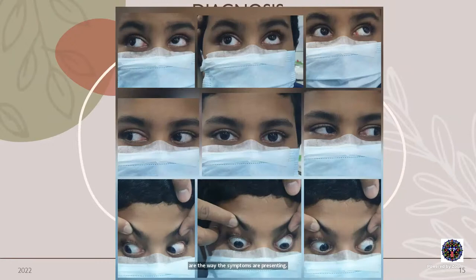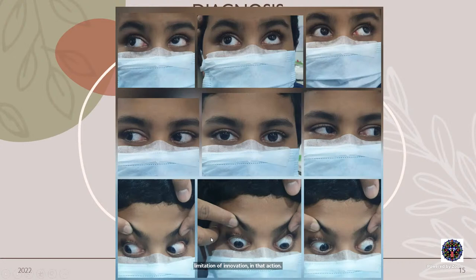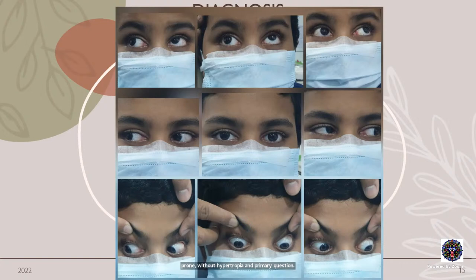Looking at signs: here is a nine-gaze photo of a patient. Primary position looks perfectly normal — no hyper or hypotropia. But in up-gaze there is a V pattern. There is limitation of elevation in adduction compared to the other side, which beautifully elevates. Depression seems normal and there is no downshoot in abduction. This is a mild or minimal form of Brown syndrome without hypotropia in primary position or downshoot in adduction, but with characteristic limitation of elevation in adduction and a V pattern.